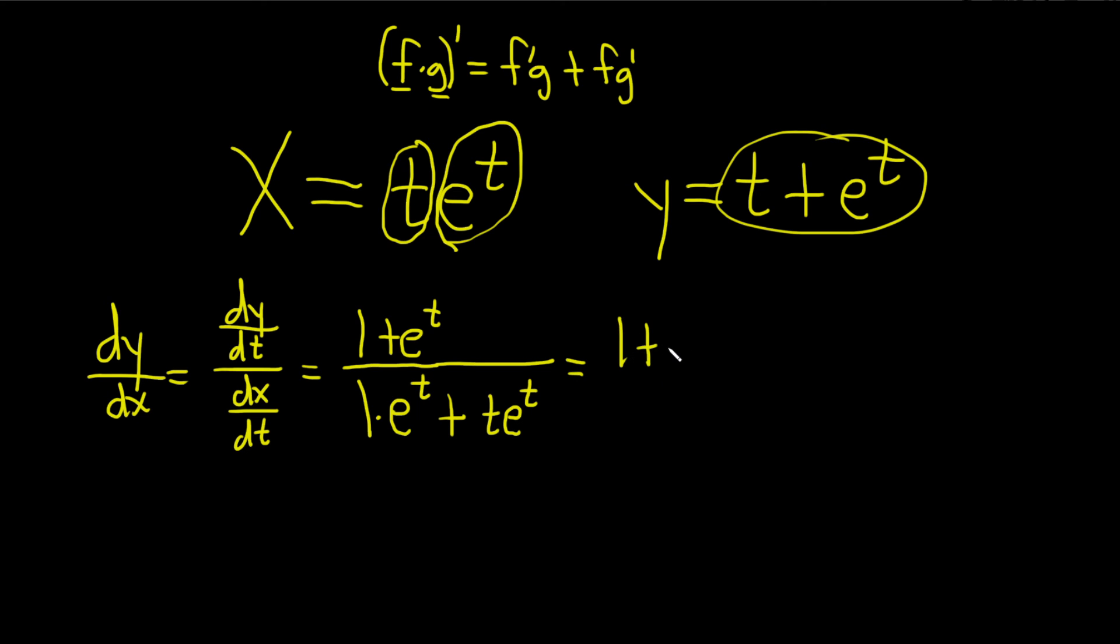This is 1 plus e to the t over, and then 1 times e to the t is just e to the t plus t e to the t. And that would be the final answer for dy/dx.